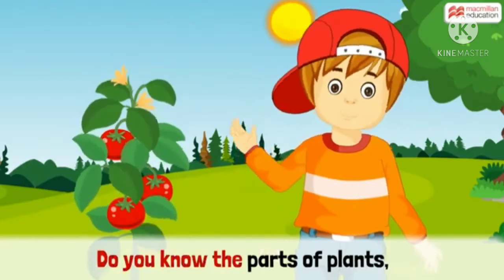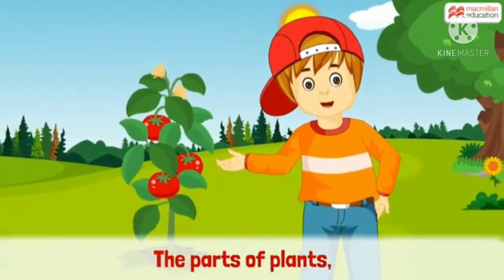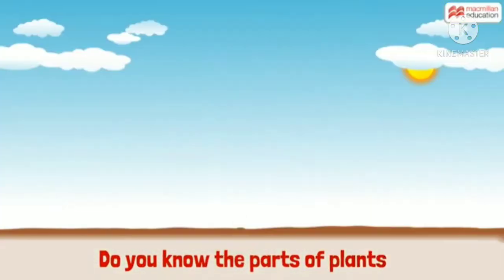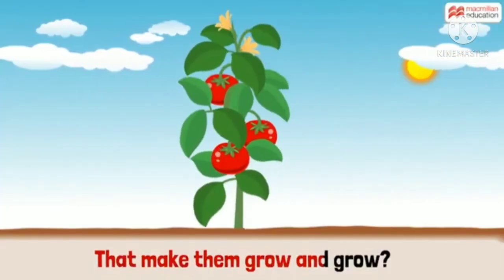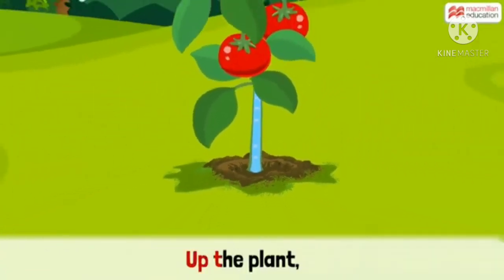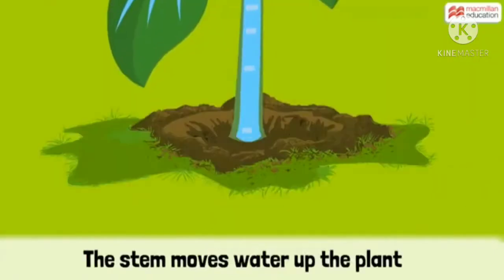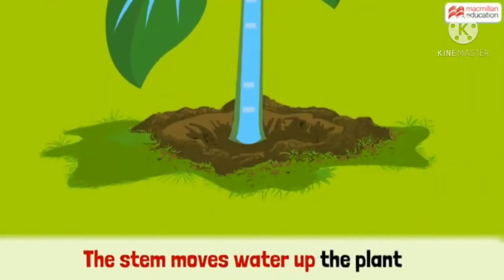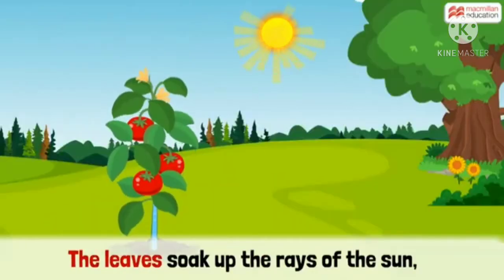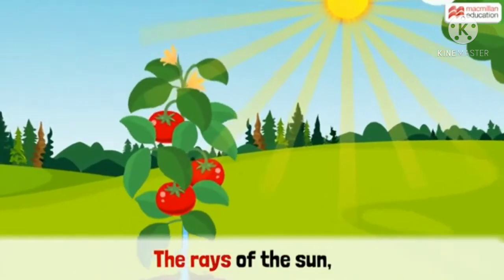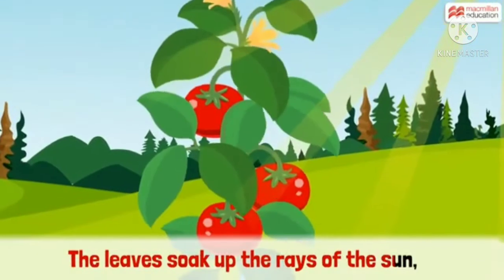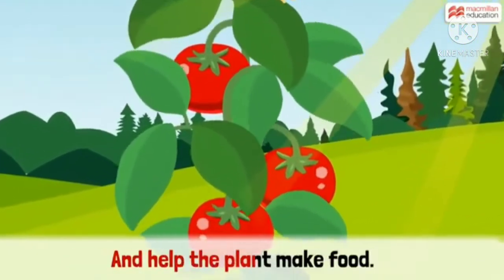Do you know the parts of plants that make them grow and grow? The stem moves water up the plant, bring water to the leaves. The leaves soak up the rays of the sun, and help the plant make food.